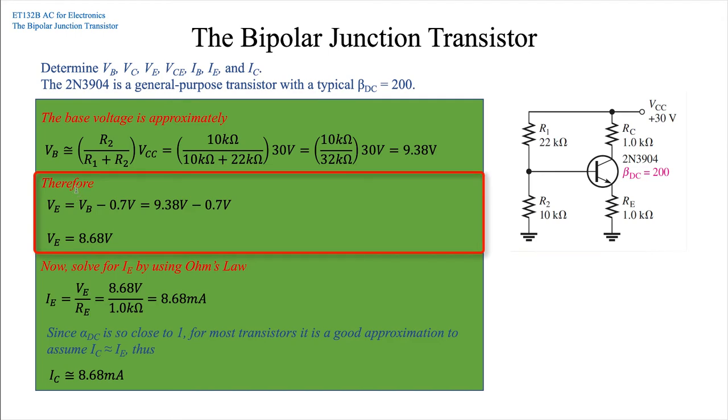Now we can use our other values. Taking the difference in VB and the barrier potential of 0.7 volts, we can solve for the emitter voltage. So VB minus 0.7 volts is 9.38 minus 0.7 volts, which gives us a value of VE of 8.68 volts. We're going to hang on to that because we're going to need that later.